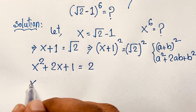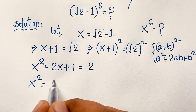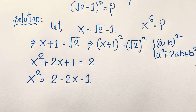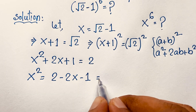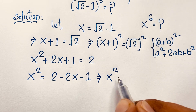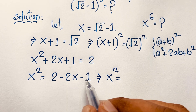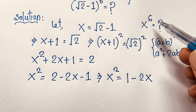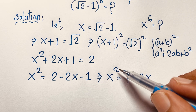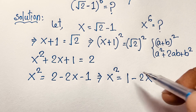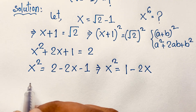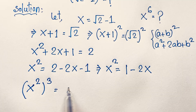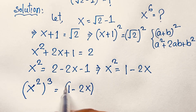Rearranging: x² + 2x + 1 = 2, so x² = 2 - 1 - 2x, which gives us x² = 1 - 2x. Our target is x to the power 6, but right now we have x squared, so we will cube both sides.